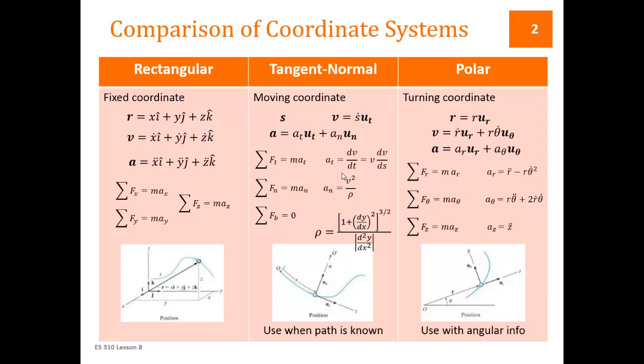We can sum our forces in those two directions and set those equal to mass times the acceleration in those directions, and our acceleration in those directions are given by these expressions. We also have a z direction in this notation where the acceleration in the z direction is the second time derivative of the position in the z direction, which is exactly like what we had in the rectangular coordinate system.